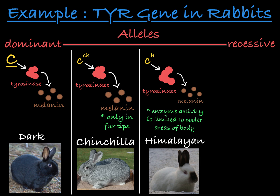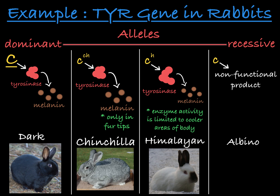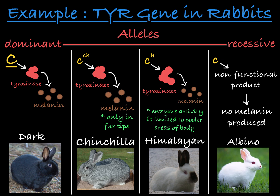The final allele, which is recessive to all of the other alleles, is little C, the albino allele. This allele encodes a non-functional version of tyrosinase, which is unable to make any melanin. A rabbit that is homozygous for this recessive albino allele will have no melanin production and completely white fur all over its body.